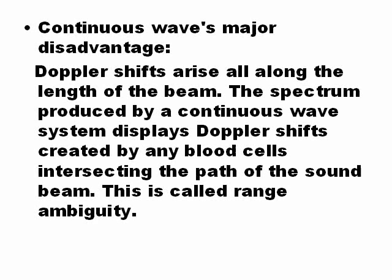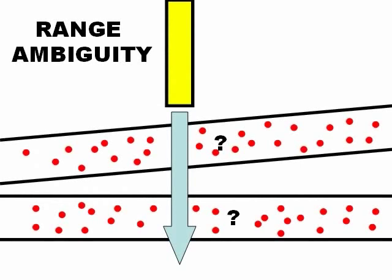This is called Range Ambiguity. Range Ambiguity means that you are not sure what area of Doppler you are measuring. For example, if you have two arteries and you get the Doppler, you don't know if it is the first or the second artery that you are measuring. This is the problem of continuous Doppler.